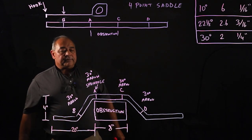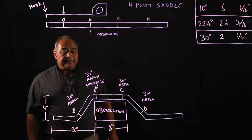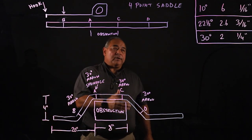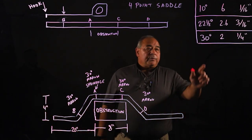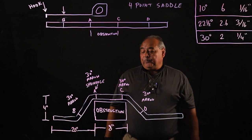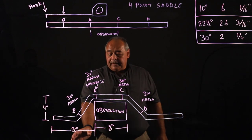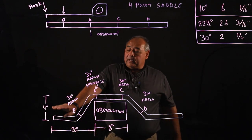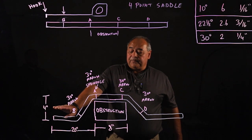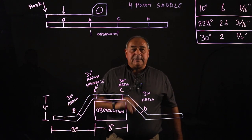We're going to use 30 degree offsets, our 30 degree bends, and create this four-point saddle. Well, 30 degree our multiplier is 2. Our raise that we're trying to accomplish here is 4 inches. So here's what's got to happen.